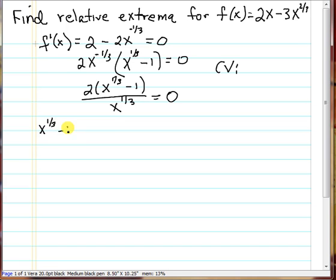Now it may be obvious to you that that's going to be x equals one, but maybe this number had been different. So we could set that equal to zero, add one to the other side, and then cube both sides of the equation. And we get x equals one.